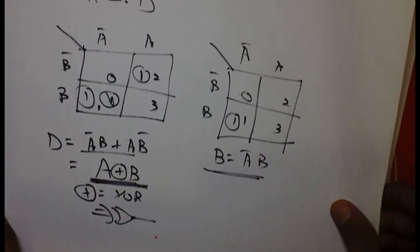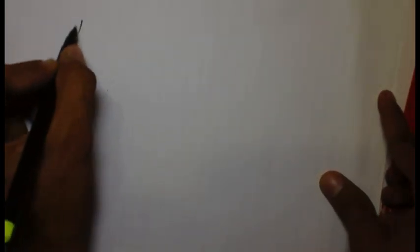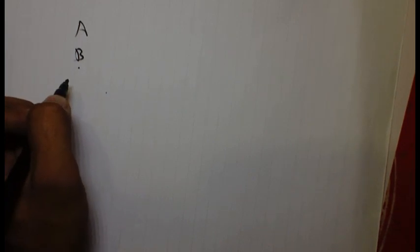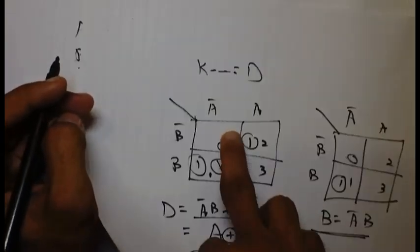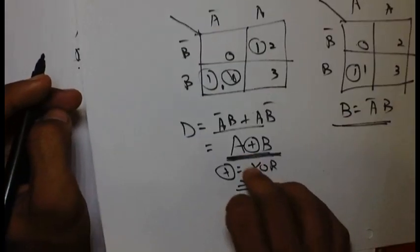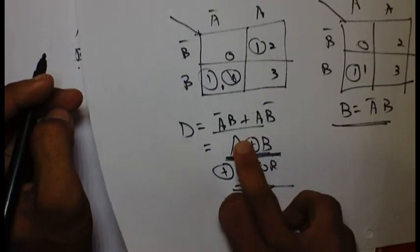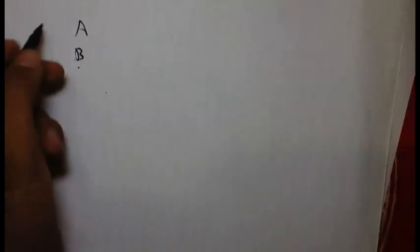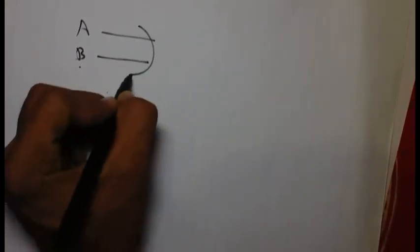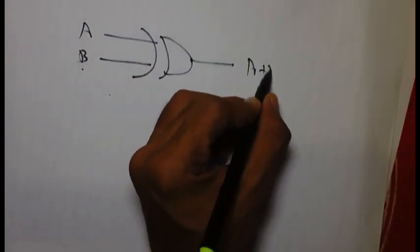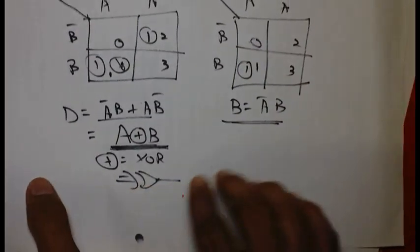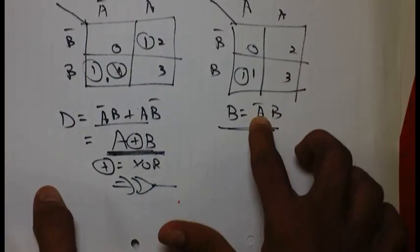From this now we can easily design the logical diagram of half subtractor. We have two inputs A and B. Now first let's design for the difference. Output D is A XOR B, so let's perform XOR operation. Here is the output of D.